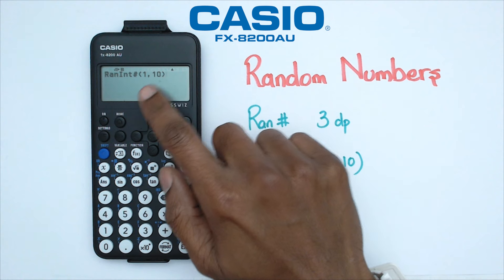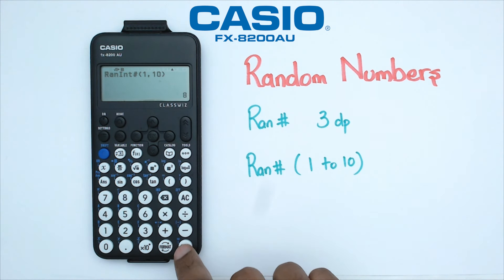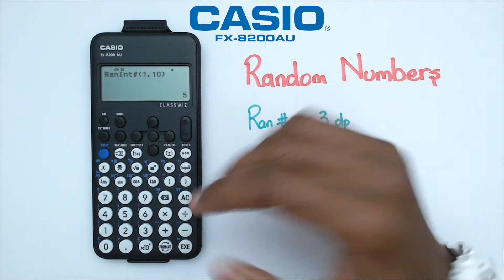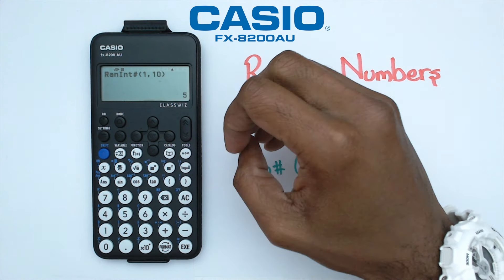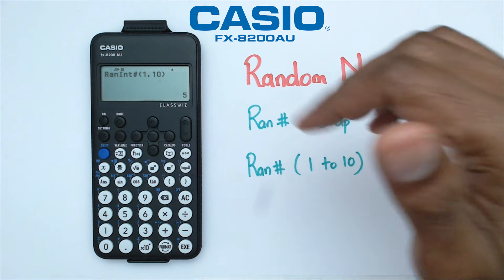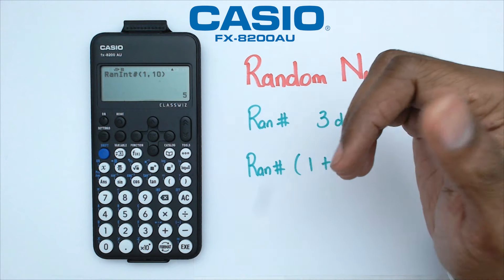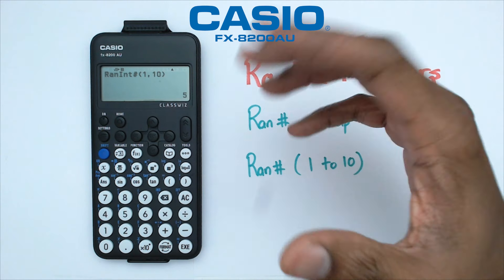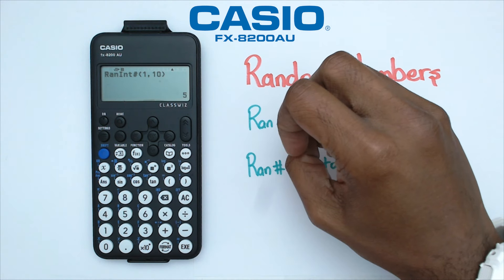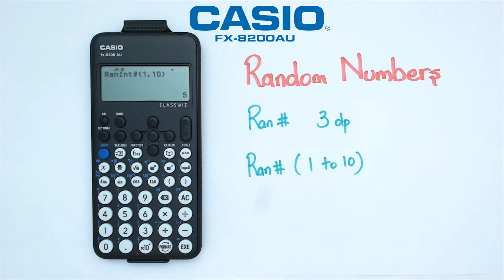Then put 10 and close the bracket. What we're asking the calculator to do is give us a random number between 1 to 10. If I press EXE, as you can see I'm getting random numbers between 1 to 10. So that's basically how you get random numbers — use random integer for a range, or the random function for three decimal places. That's about it for this video.